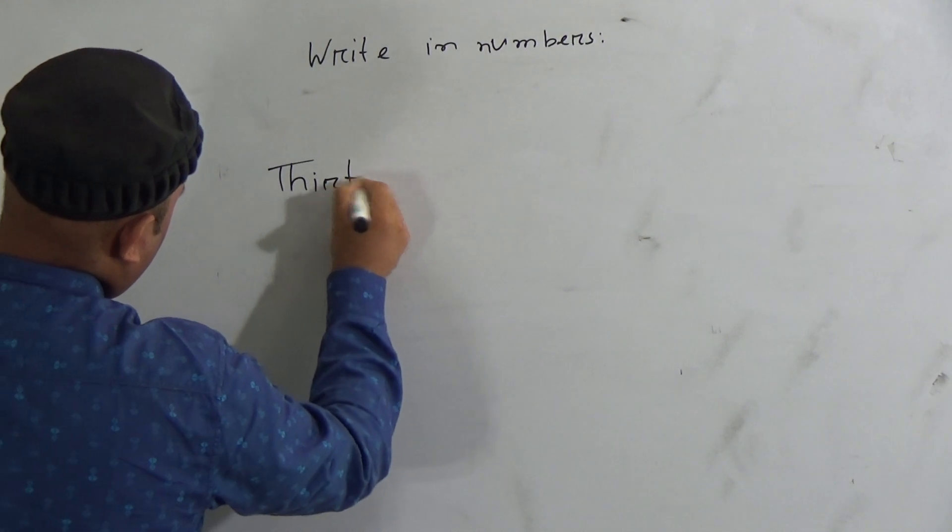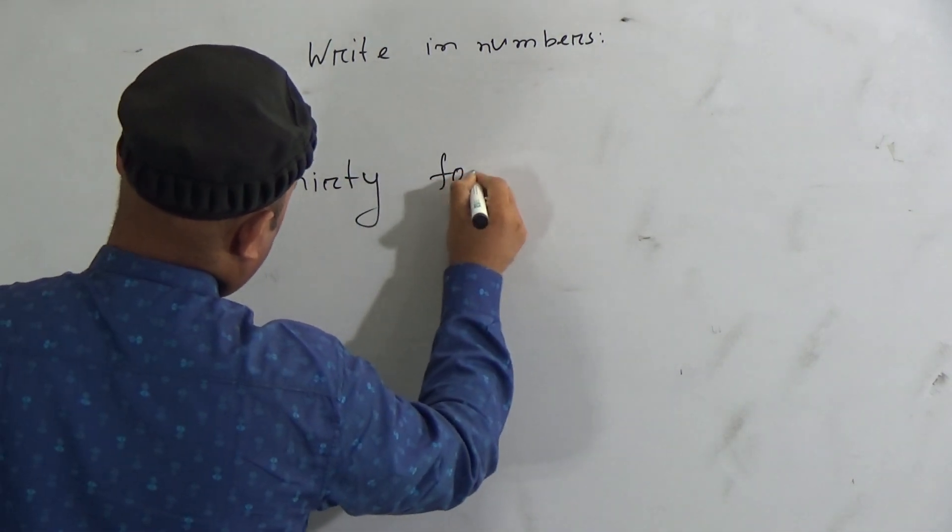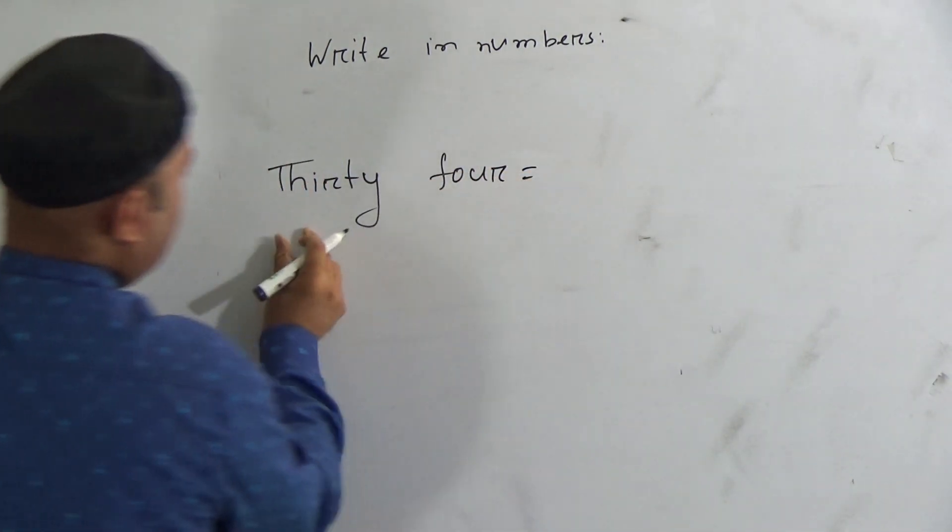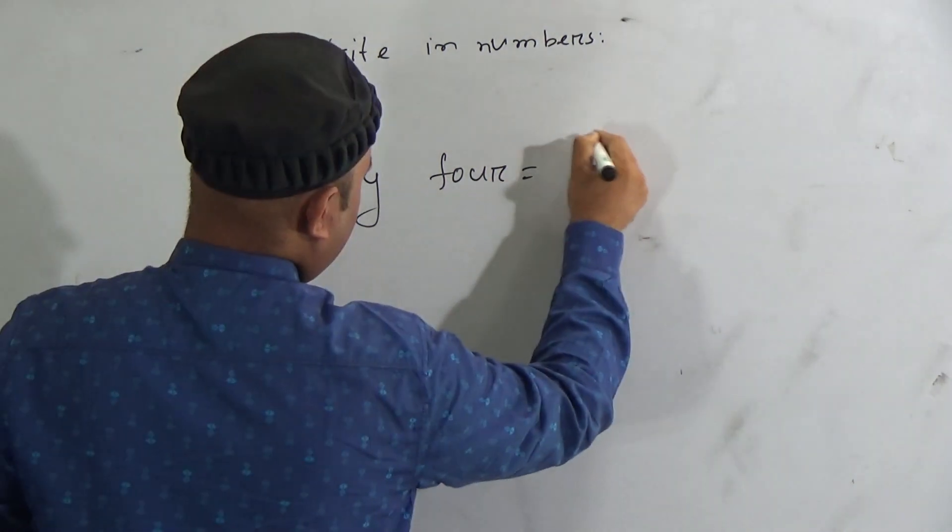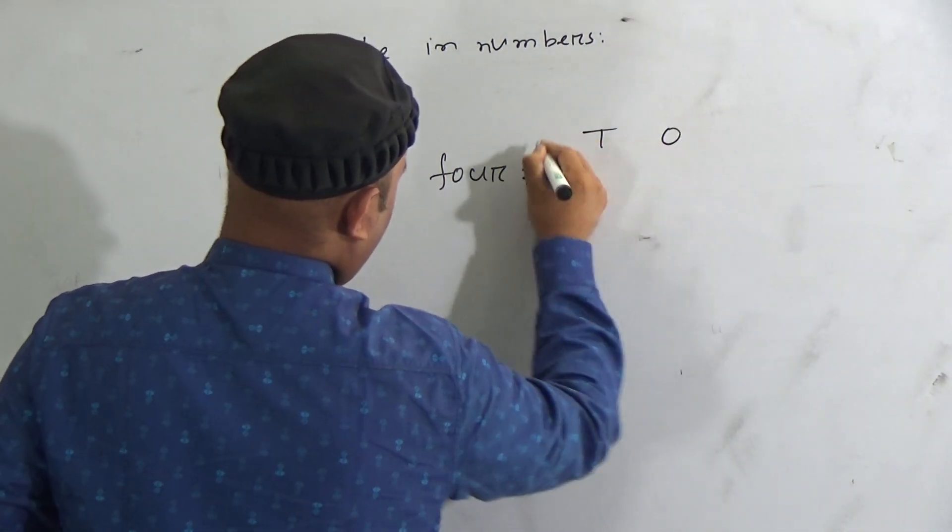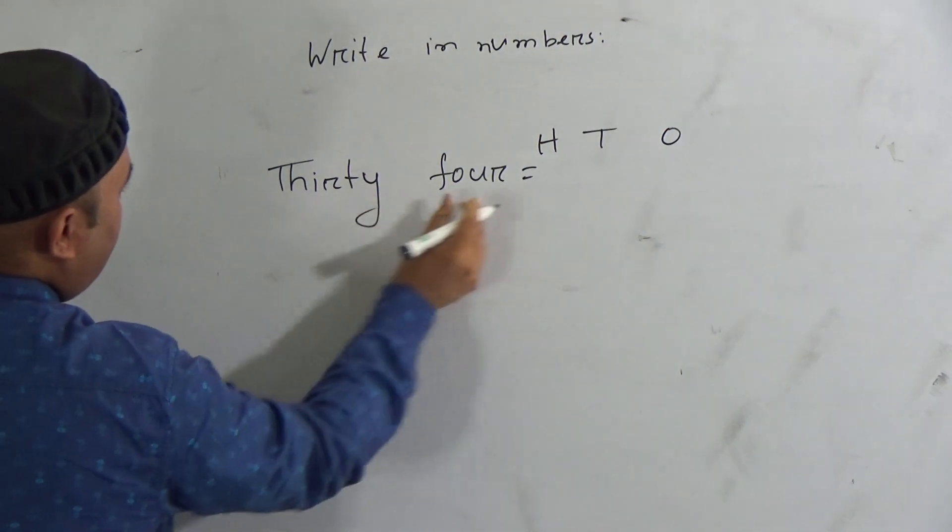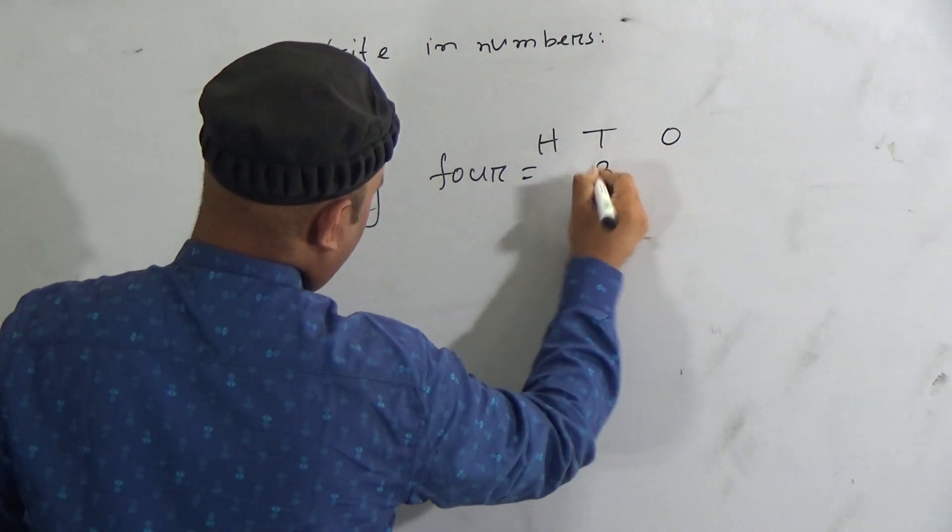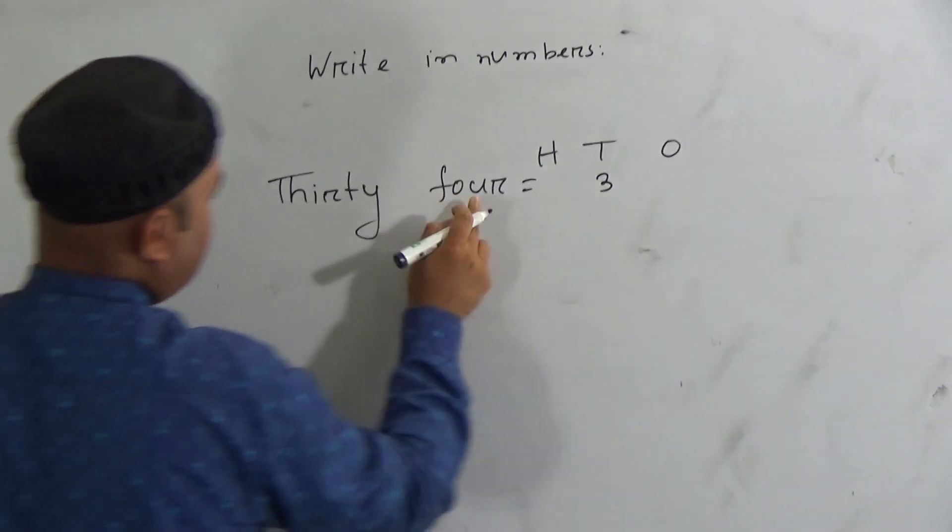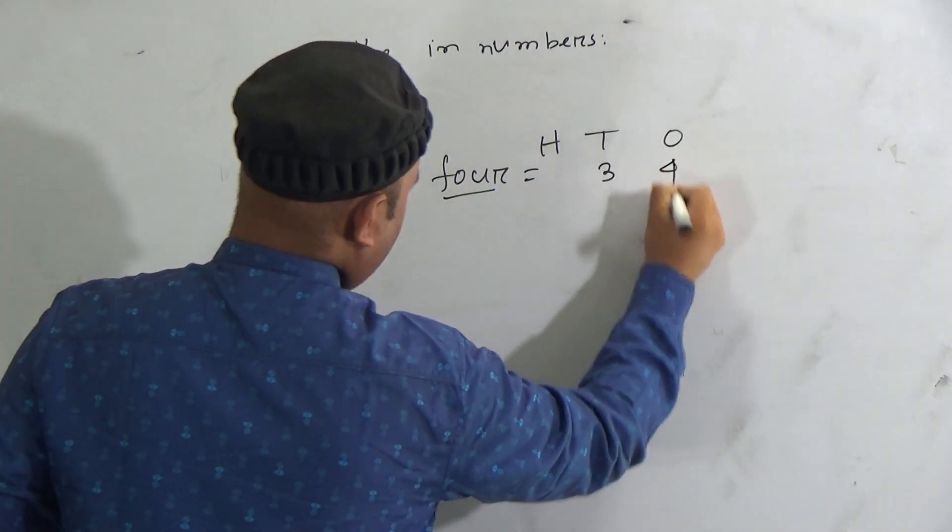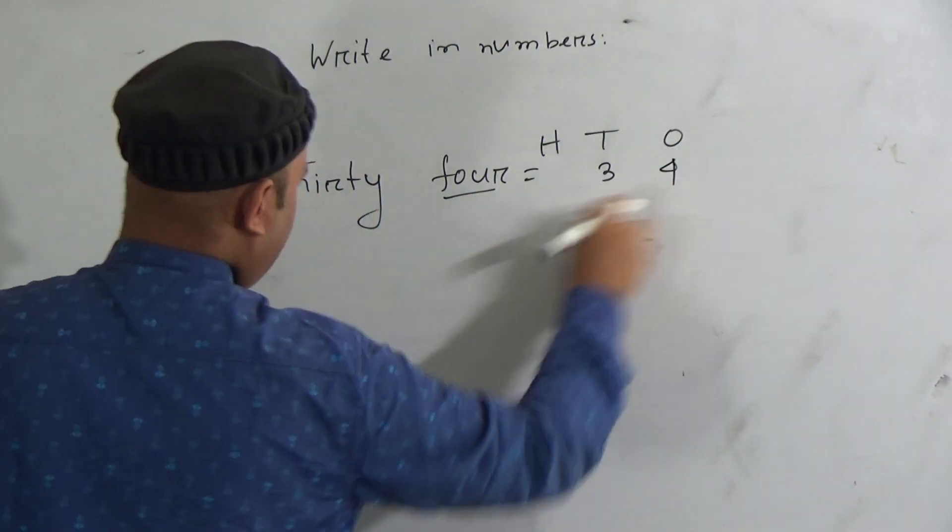Now 34. So 34, that means tens, ones, hundred. 34 is 3 in tens place and 4 in ones place. So it will be 3 and 4.